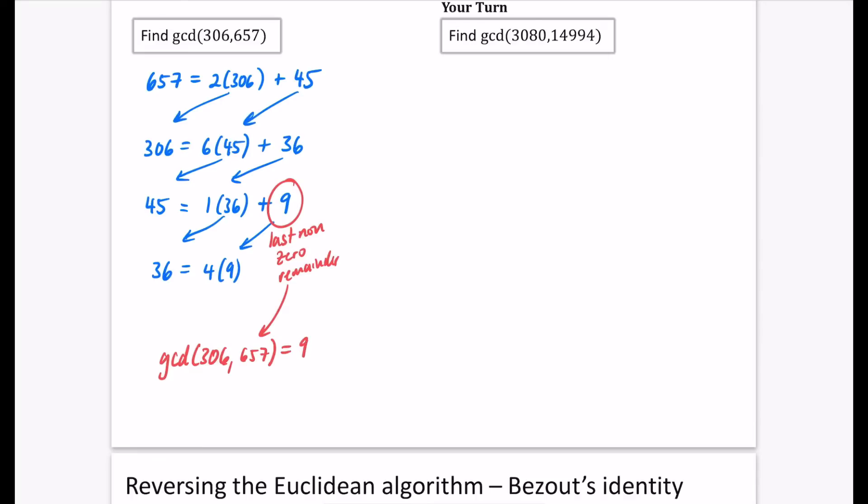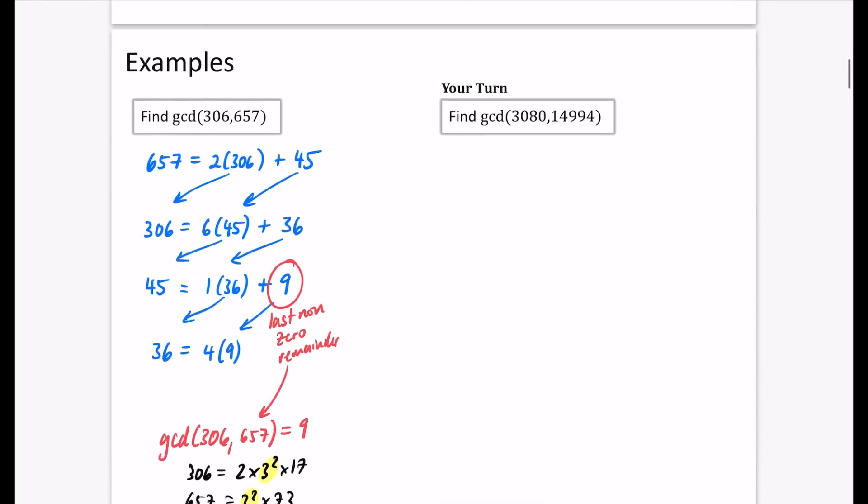Which means that using that information we have, we can now say that the GCD of 306 and 657 is equal to nine. Now, I'm going to just quickly show that to you with the GCSE version. If I use the GCSE thing, and I do the shift fact on 306, it is 2 times 3 squared times 17. If I do it on 657, 657 is 3 squared times 73. And very clearly, we can see that the only factor they have in common is that 3 squared. So we know that it is correct for that part. But you do need to know how to do this Euclidean algorithm.